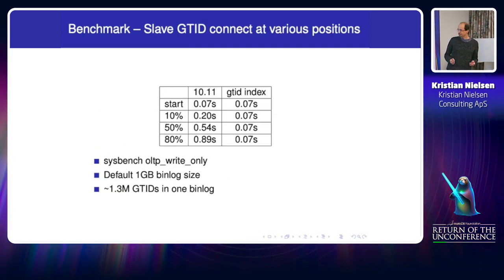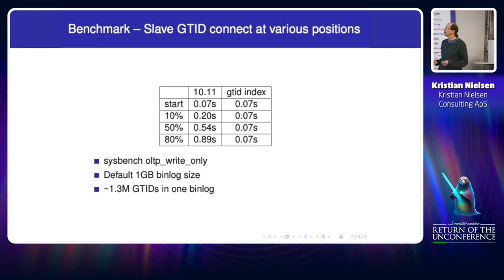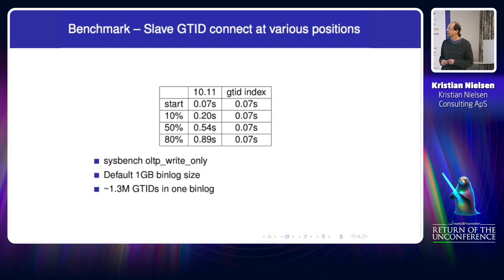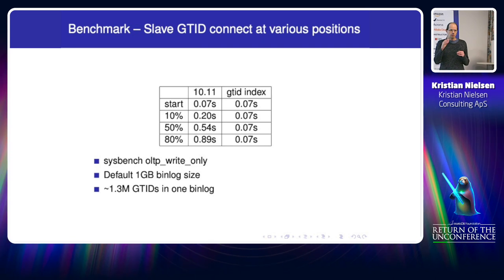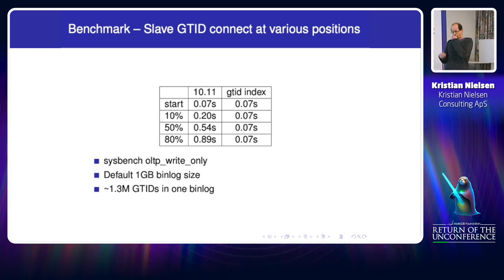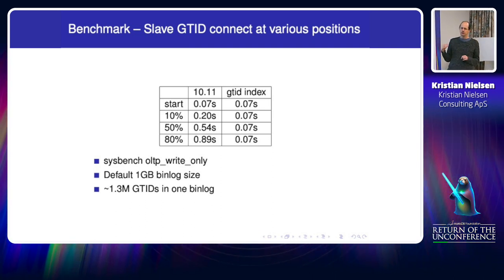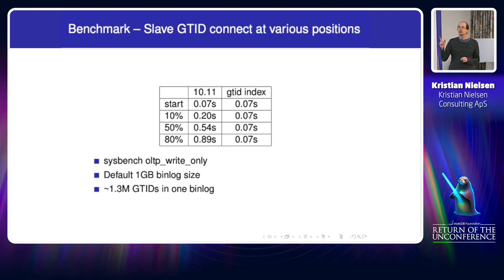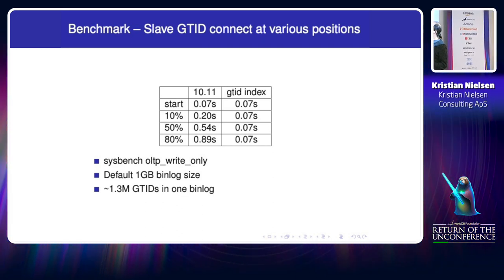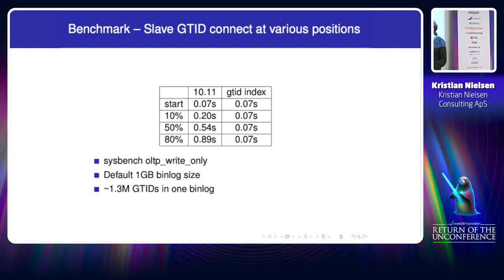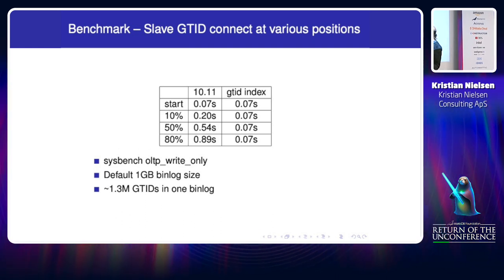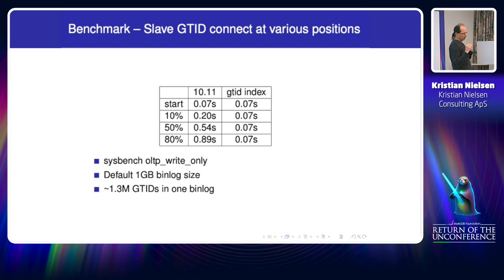I did some benchmarks on my prototype implementation. I ran a sysbench write-only workload to generate binlog files of the default 1 GB size. With this benchmark there are approximately a bit more than a million transactions per binlog file. I timed how long it takes for the slave to connect to the master and replicate one transaction — using GTID mode in MariaDB 10.11 versus the new implementation with the GTID index, starting from different positions. Before, the time increases linearly, reaching around one second.